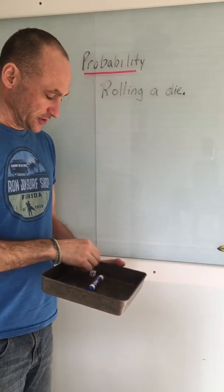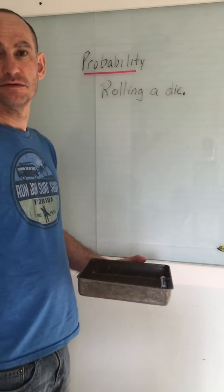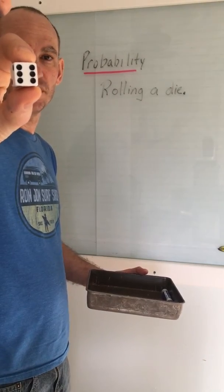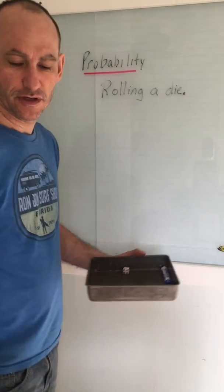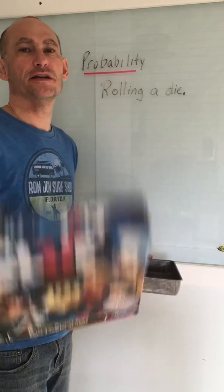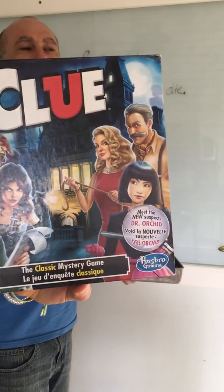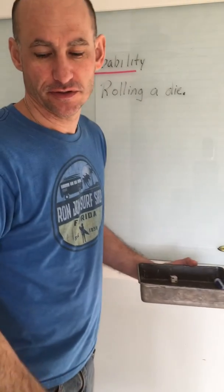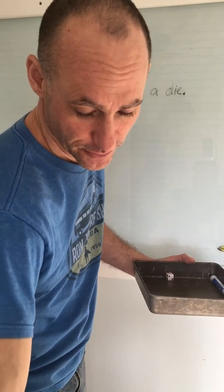Good morning, Brandon. We're going to talk about rolling a cube or a number dice today. One of our family favorite games that we play that includes a die is Clue — solving the murder mystery. Something you can do with the old folks and Tyler when you get a moment.